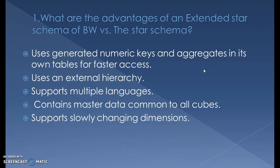What are the advantages of an extended star schema versus the star schema? In a star schema, we have the fact table surrounded by dimension tables. In the extended star schema, we don't just have the fact table and dimensions — we also have master data surrounding each dimension. For example, if there is a characteristic in a dimension, we have master data maintained for it, which forms the extended star schema.